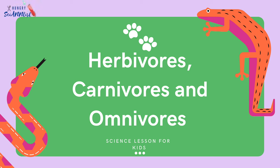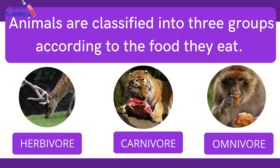In this video, we will learn about herbivores, carnivores, and omnivores. Animals are classified into three groups according to the food they eat. They are grouped into herbivore, carnivore, and omnivore.